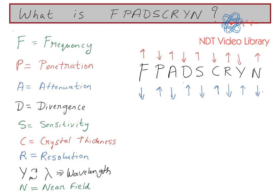Now let's see how we can use this. Consider frequency going up. If I increase my frequency, then the penetration goes lower — so I don't get more depth of penetration, I get more attenuation — and so on and so forth: crystal thickness goes down, resolution goes up. You can find the relationship between any two parameters.